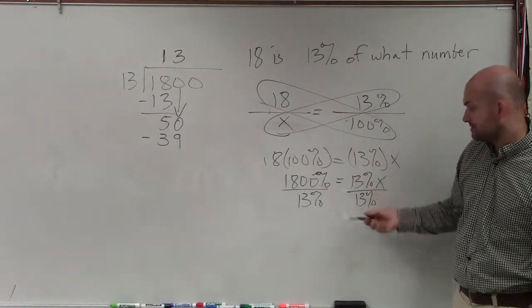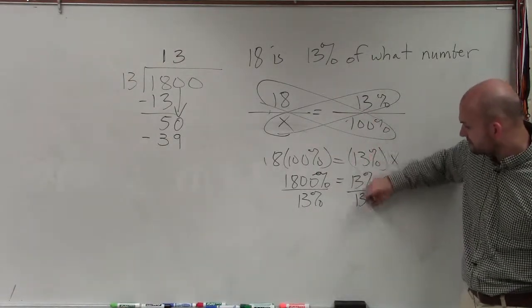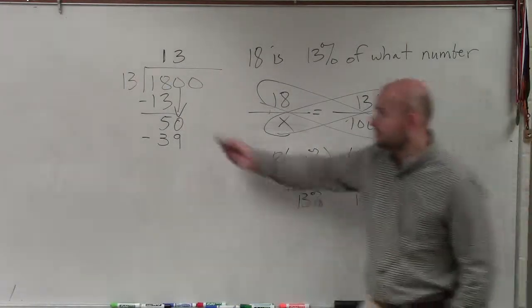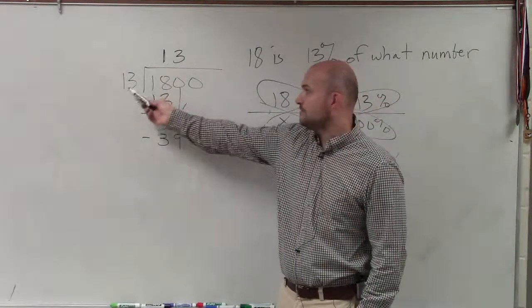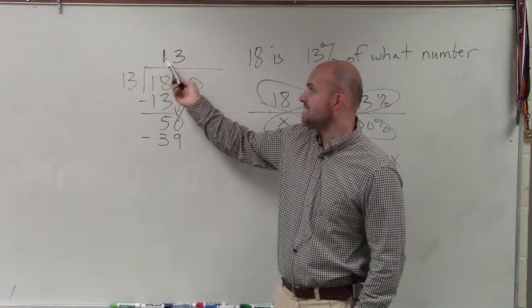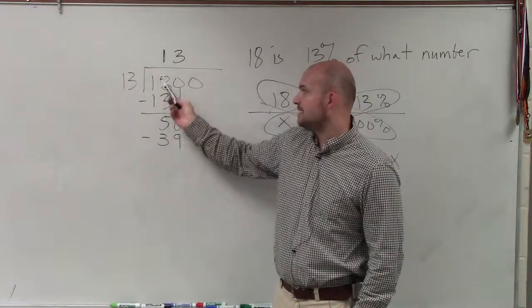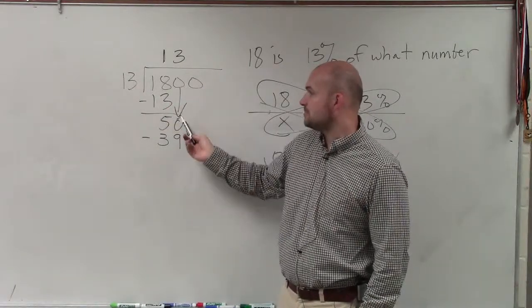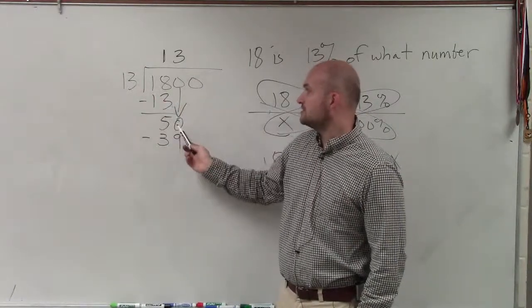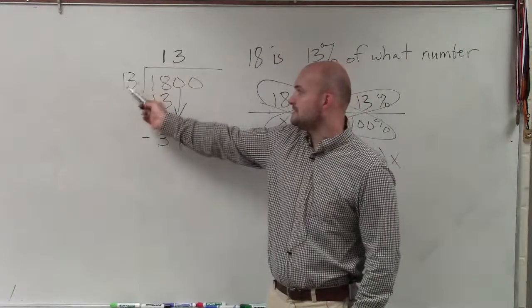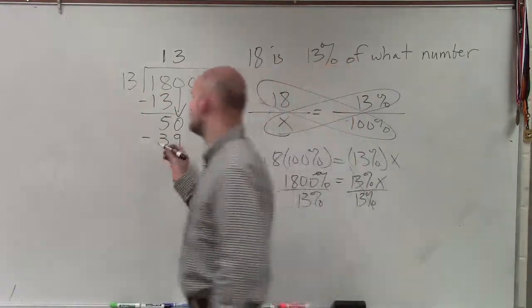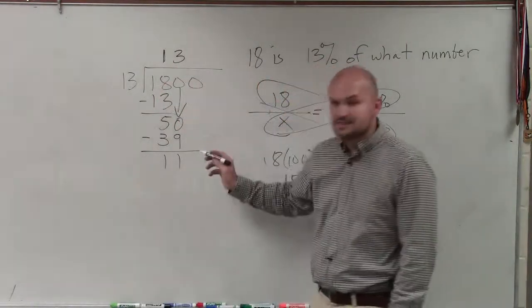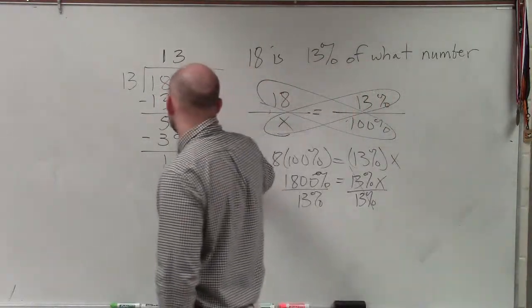So all I'm doing is, as long as I can have you from here, you've set up the proportion. Apply the cross product. I'm solving for x, so I'm dividing by 13%. So I need to do 1,800 divided by 13. 13 does not go into 1. 13 goes into 18 one time. 1 times 13 is 13. 18 minus 13 is 5. 13 does not go into 5, so I brought back the 0. 13 goes into 50 three times. 3 times 13 is 39. Subtract them. I get 11.